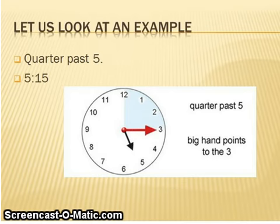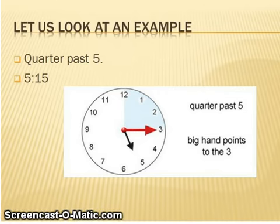Let us have a look at the digital clock. We start with the hour hand — we always check what it passed. It passed the five, so we write five-dot-dot-fifteen.